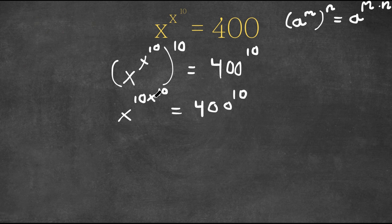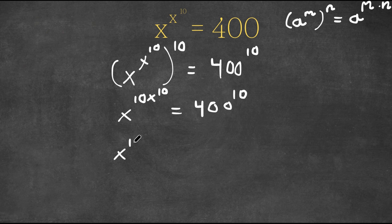Now x to the power of 10 times x to the power of 10 — remember, a to the power of m times n is equal to a to the power of m to the power of n. So we could rewrite this as x to the power of 10 to the power of x to the power of 10.